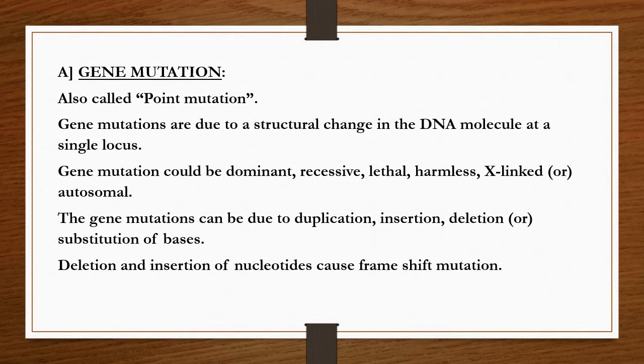The first type of mutation is gene mutation, also called point mutation. Point mutations are due to a structural change in a DNA molecule at a single locus or single location.